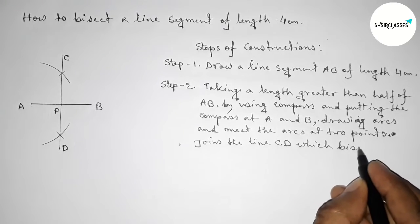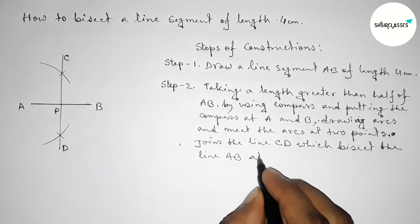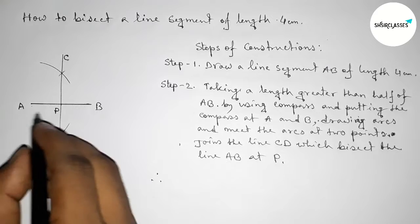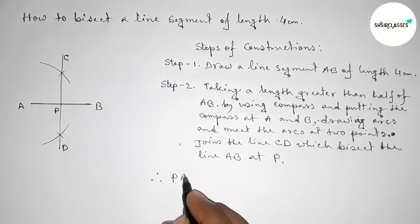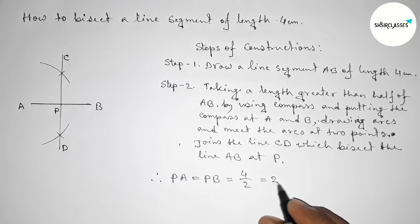Joining the line CD which bisect the line AB or bisect at the point P. So the length PA equals to PB. So PA equals to PB equals to 4 by 2, so this is obviously 2 centimeter.